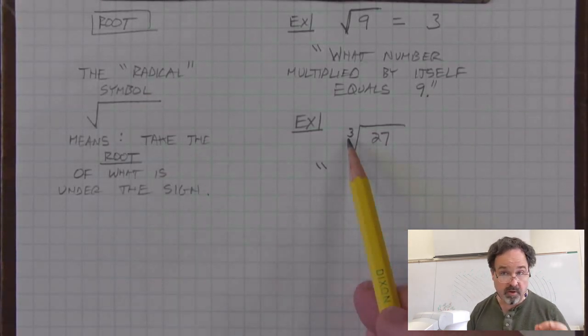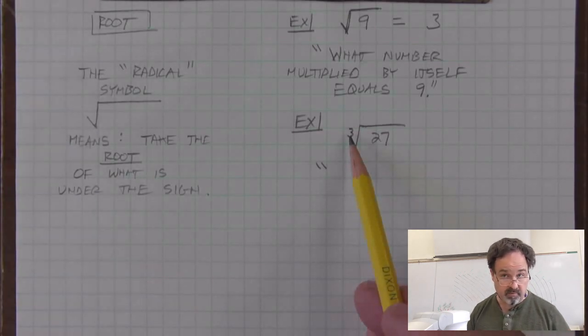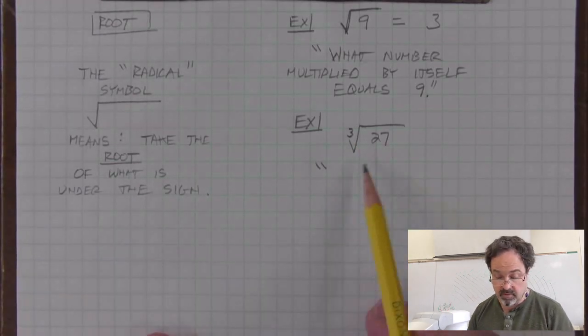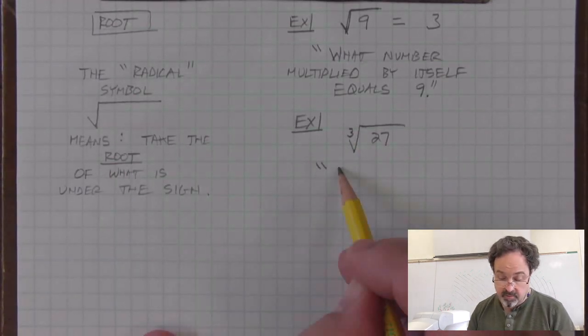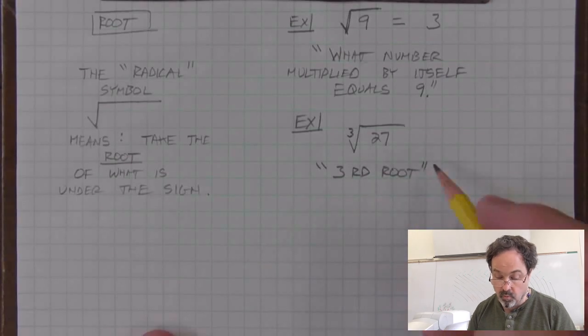By putting the 3 here, we're finding the cube root - something that you have to cube, or multiply by itself a total of 3 times, to get 27. This sign means the third root or the cube root of 27.